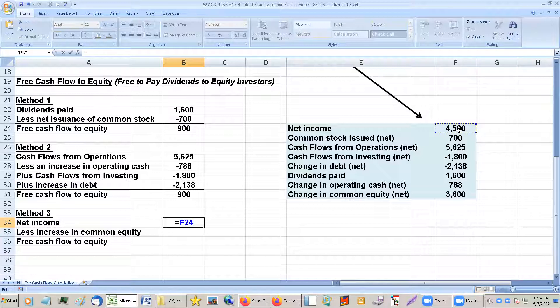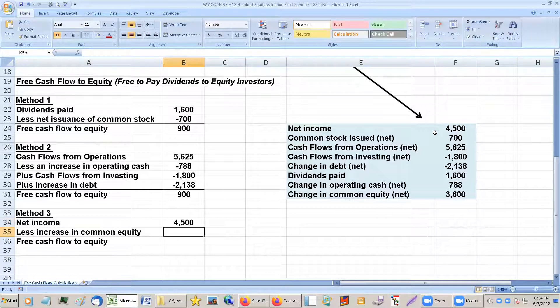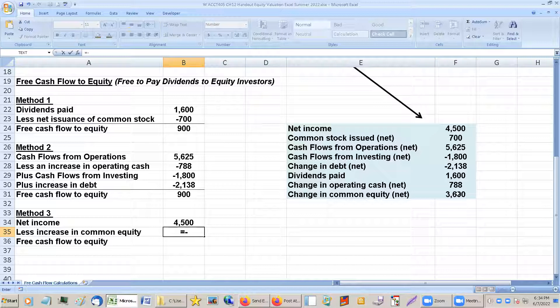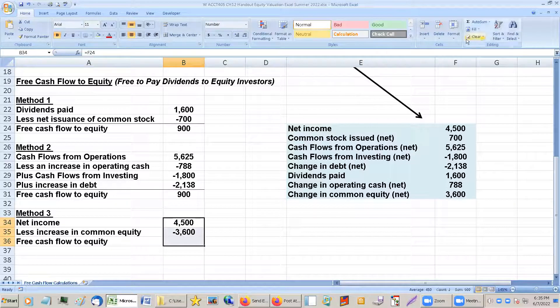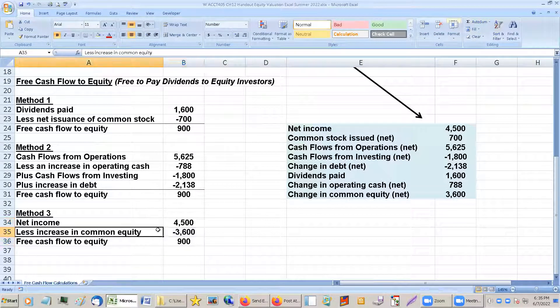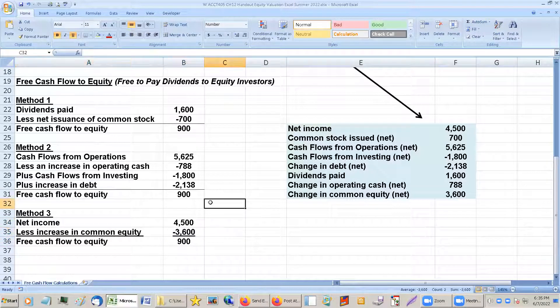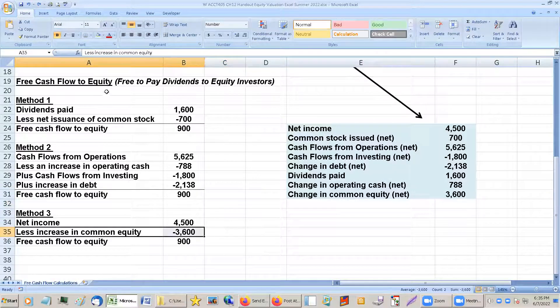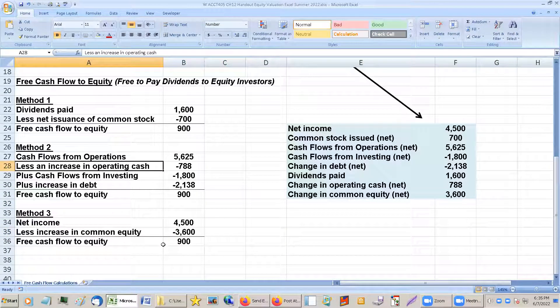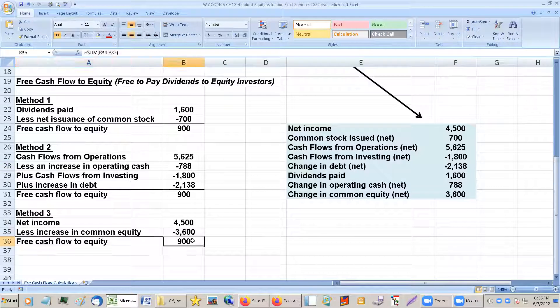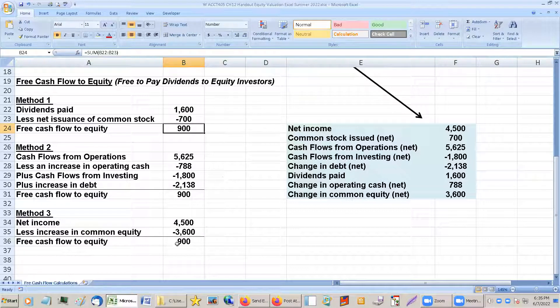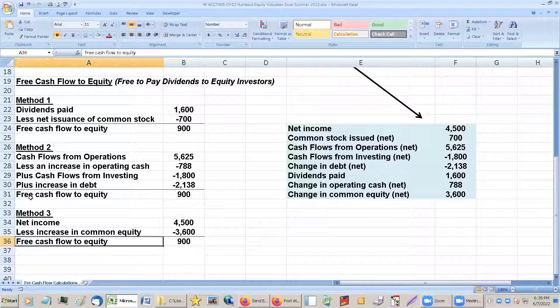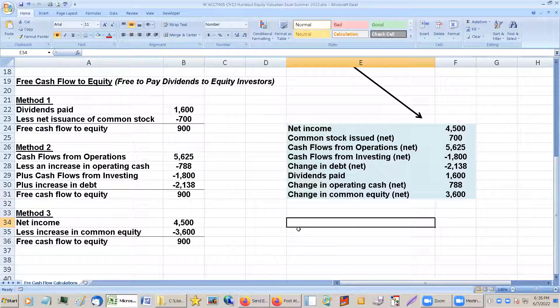Lastly, we have net income less increase in equity, in common equity I should say. And what this does is this really comes out and says, okay, what is really free to pay to the common shareholders. You know, what is free for them to actually get paid out.